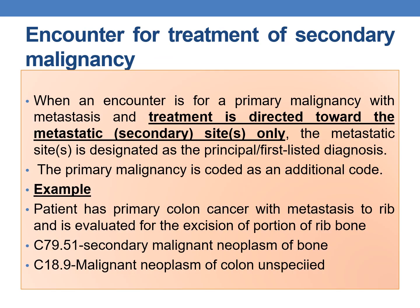The next guideline is encounter for treatment of secondary malignancy. When the encounter is for a primary malignancy with metastasis and the treatment is directed towards the secondary or metastatic site, then the metastatic site is designated as PDX and the primary malignancy is coded as an additional code. Example: a patient has primary colon cancer with metastasis to rib and is evaluated for excision of a portion of rib bone. The reason for visit is treatment of the metastatic site, so PDX is C79.51 (secondary malignant neoplasm of bone), followed by C18.9 (malignant neoplasm of colon, unspecified) as the primary malignancy.